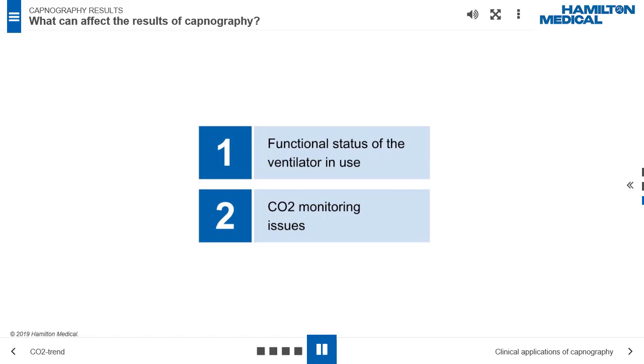Equipment factors include additional instrumental dead space, circuit or airway occlusion or leak, or malfunctioning of the ventilator system, and CO2 monitoring issues. These factors provide guidance for troubleshooting in the event of abnormal capnography results.